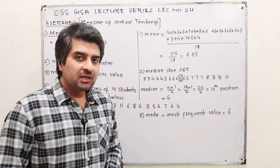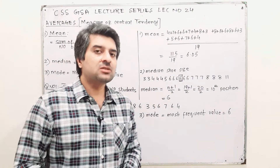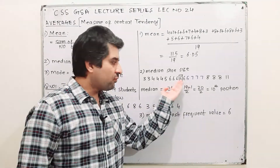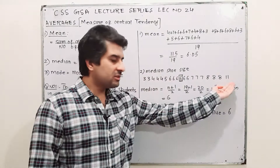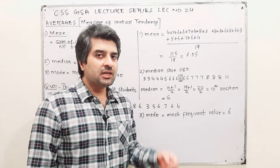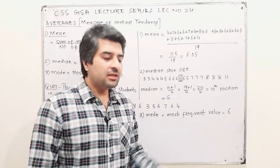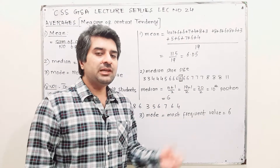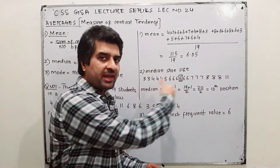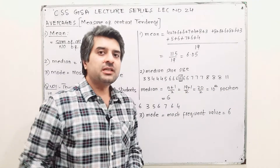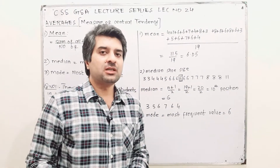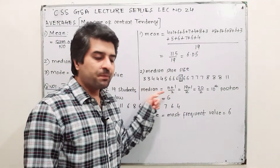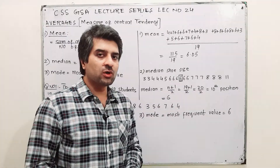The middle term is the term before which you have 9 values and after which you have 9 values — 9 + 9 + 1 middle = 19. The middle value is the one with the same number of values before and after it. There is a formula to calculate the position: (n + 1) / 2.